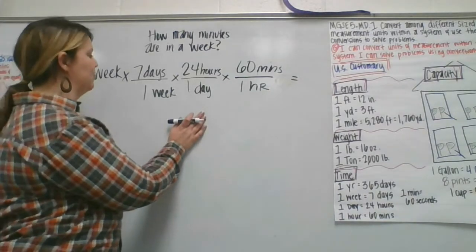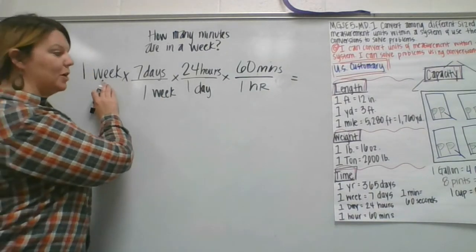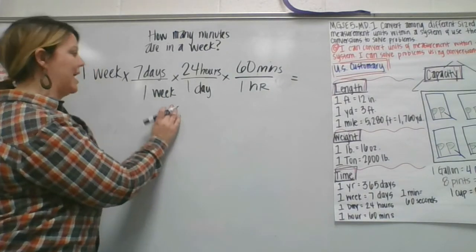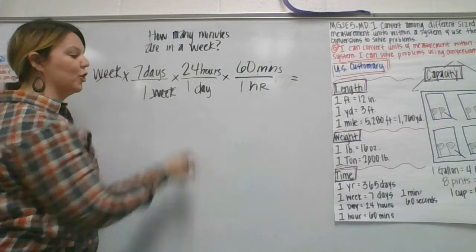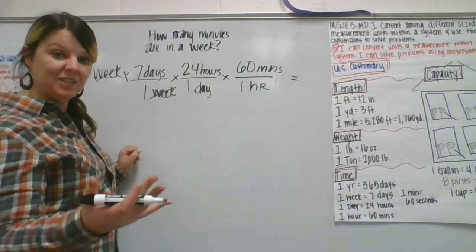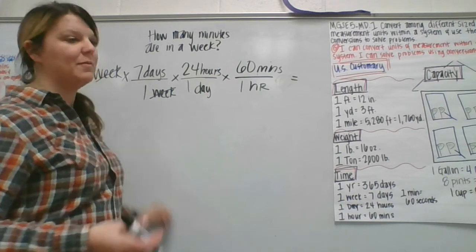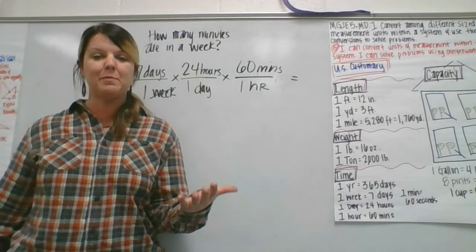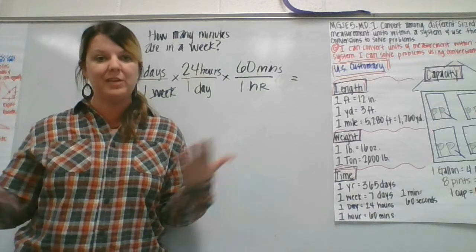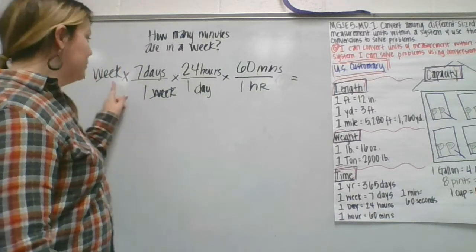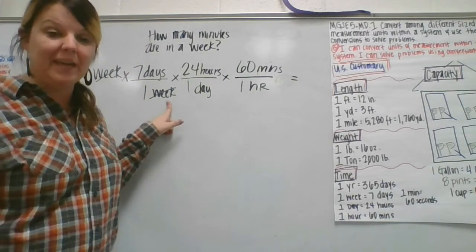Now, when the reason that this works is because basically you're multiplying by a week and you're dividing by a week. When you do that, you cross out or you cancel out that unit of measurement. So just like if you multiply the number by five and then you divided it by five, you get right back where you started. If you multiply by a week and divide by a week, it's canceling itself out.